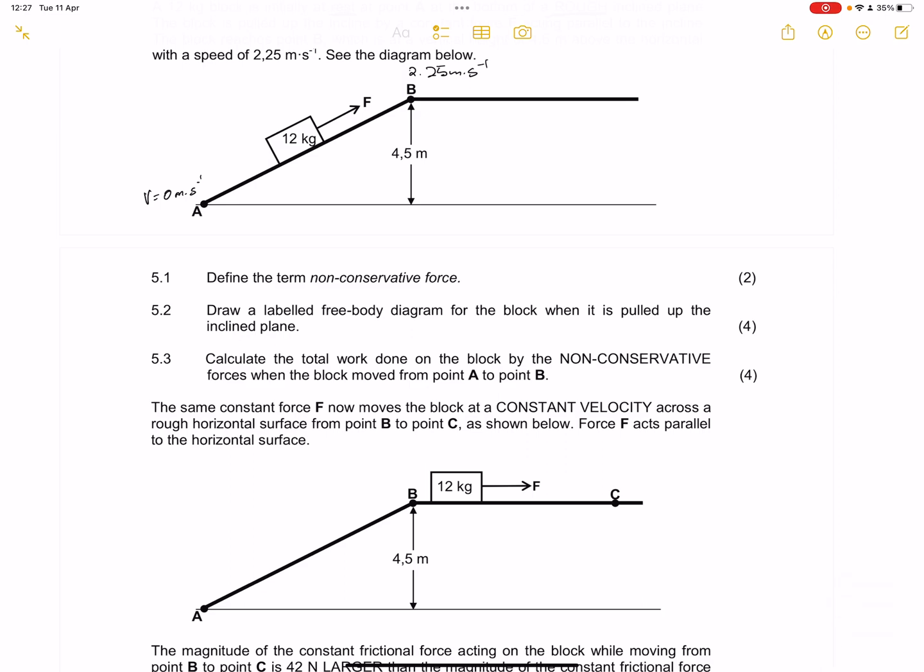The work done by friction is not conserved. And in this case, of course, for a conservative force, a very good example is the gravitational force, because regardless of where the motion is, gravity always acts vertically downwards.